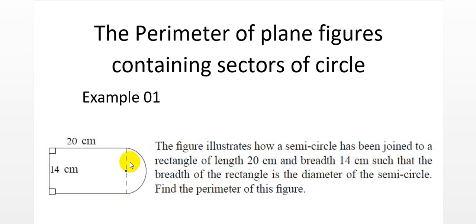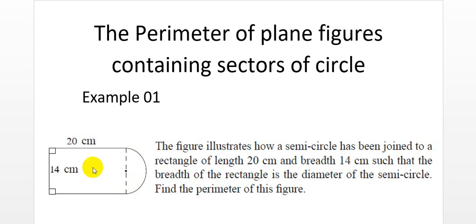To calculate the perimeter, you simply add 20 centimeters, 14 centimeters, and another 20 centimeters. We will not add this particular dotted line because it is not included in the perimeter of this combined plane figure. Instead, we are going to calculate the arc length of this particular semicircle, which we learned in the previous lesson. So the perimeter is the summation of 20 cm, 14 cm, 20 cm, and the arc length of the semicircle.